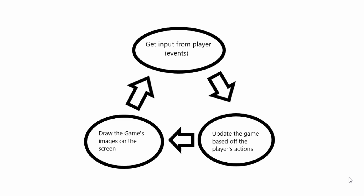Before we do any coding it's important to know how a game loop works. Our loop starts when we get input from the player — for example they press on the keyboard or click the mouse, basically anything they need to play your game. Pygame is going to denote these as events. From here we take what the player has done and update the game based off their actions — so if they press the left arrow key the character should move slightly to the left. We'll perform any adjustments or calculations here, and finally we draw the game onto the screen.